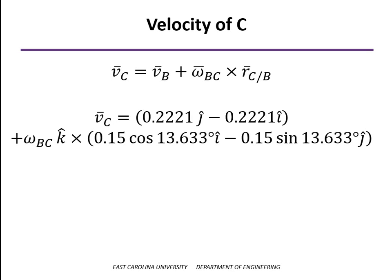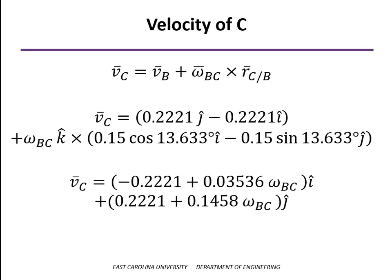For the i component, because of the fact that there's already a negative sign there, the negative signs will cancel. So both of the terms we get from the cross product will be positive. We add those onto the terms we have for the velocity of B.